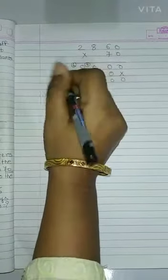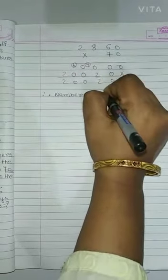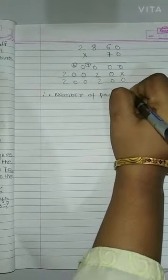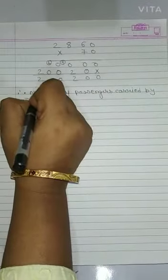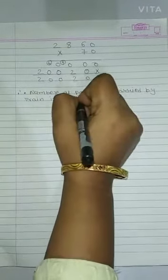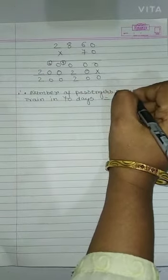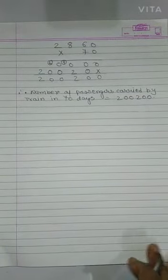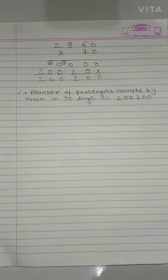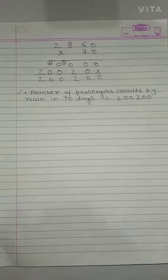So therefore, number of passengers carried by train in 70 days equals to 200,200. So students, like this you have to solve all these three problems in your notebook. Then we will meet in another video. Till then stay home, stay safe. Bye bye.